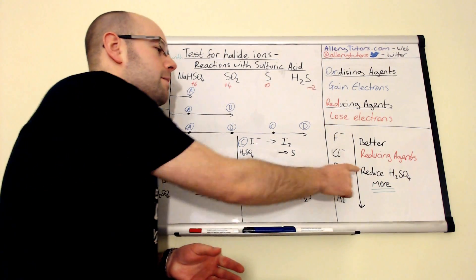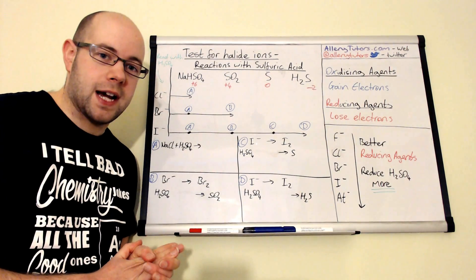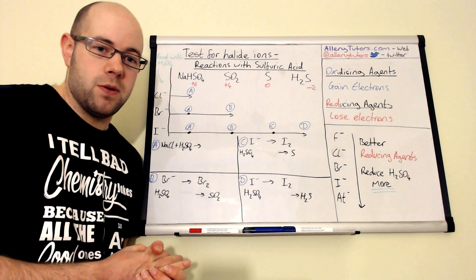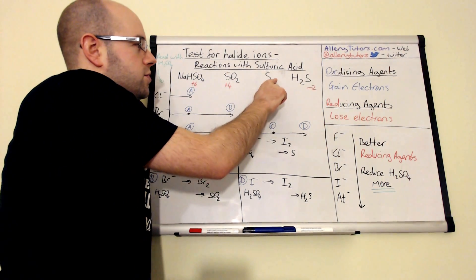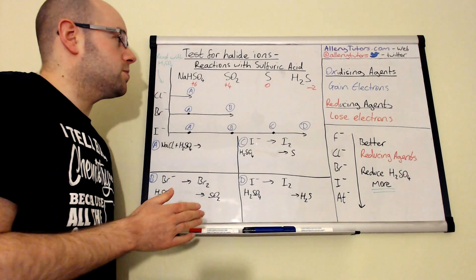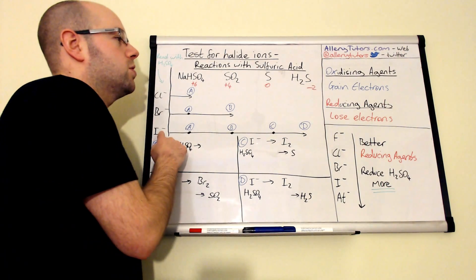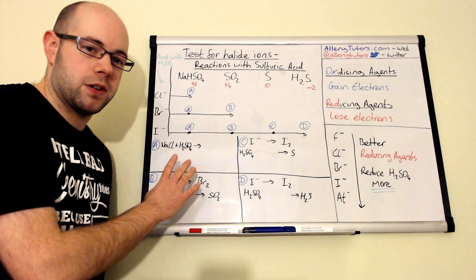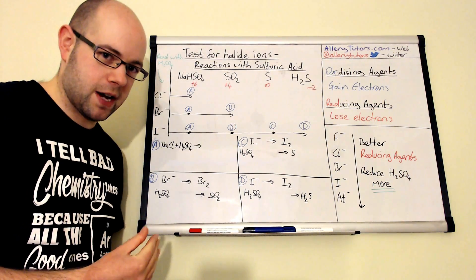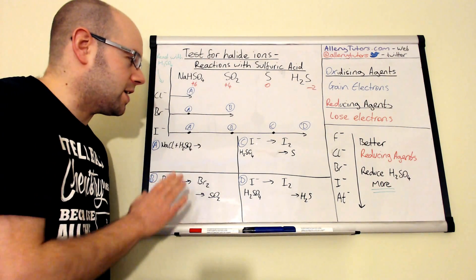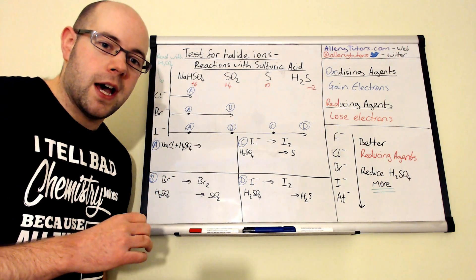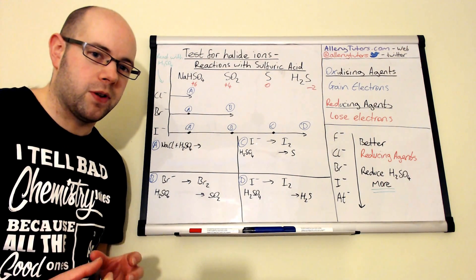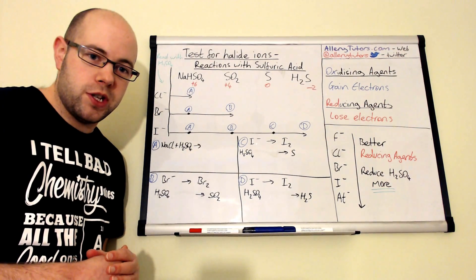If this is in your syllabus you'll need to know the reactions of halide ions with concentrated sulfuric acid. Sulfuric acid can be reduced to several products: sulfur dioxide, sulfur, and hydrogen sulfide. We're going to look at the reactions of chloride, bromide, and iodide ions, what products they make, the equations, and what you would observe. We're going to balance half equations — if you're not sure how to balance a half equation, click the link below to watch the video on balancing half equations and combining them to form a full ionic equation.